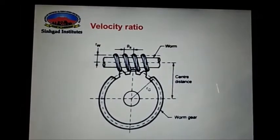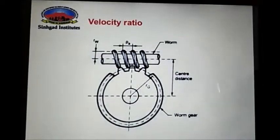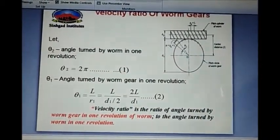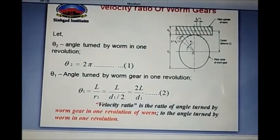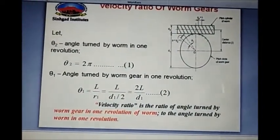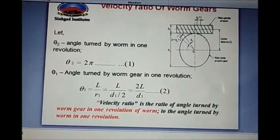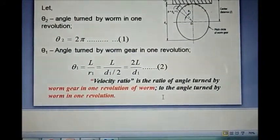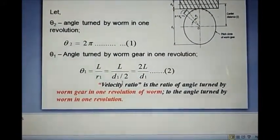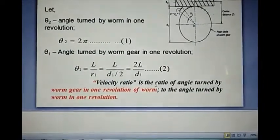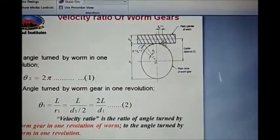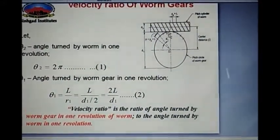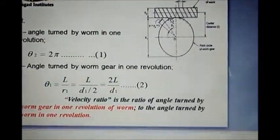Hello everyone. Let's discuss a new theory topic of worm and worm gear — that is, velocity ratio. Velocity ratio is the angle turned by the worm gear in one revolution of the worm, to the angle turned by the worm in one revolution.